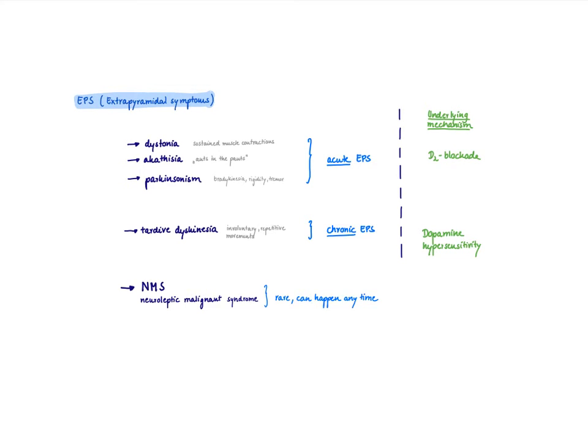For the acute extrapyramidal symptoms, we know that this is due to dopamine blockade. And therefore, we can also do something about it. Because first of all, we know that there is a balance in the substantia nigra between dopamine and acetylcholine. So if you block dopamine, you have a lot of acetylcholine. And that's going to generate all these movement problems. Therefore, how can you help this patient? You can give an antimuscarinic drug, for example, or you can try to lower the dose.